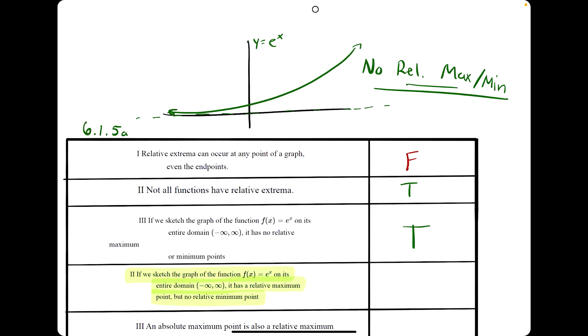The next statement claims that e to the x has a relative max but no relative min. But we just said that it has no relative max or min, so this is false.